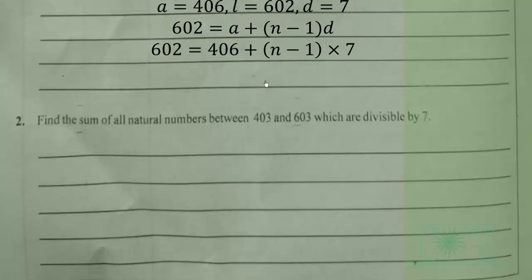Then we group like terms: 602 - 406 will give us 196. So dividing through by seven gives us 28 = n - 1. So the number of terms that are divisible by seven, there are 29.